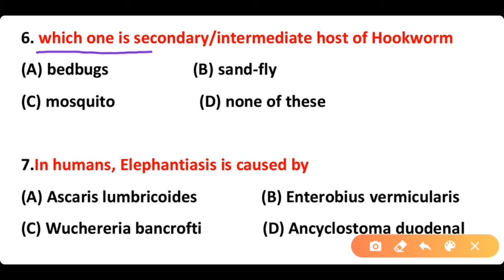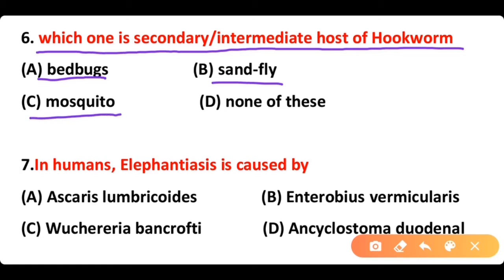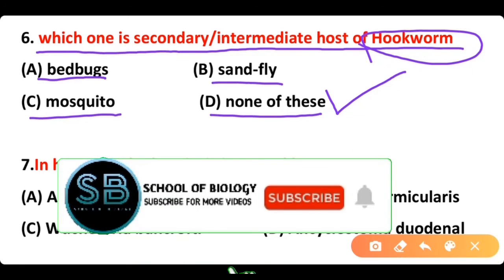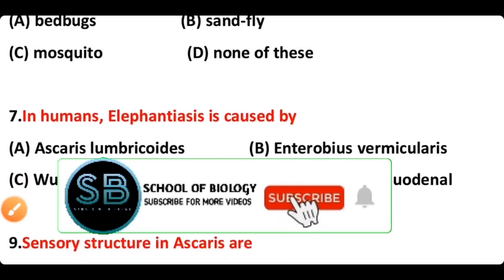Question 6: Which one is the secondary or intermediate host of hookworm? Options: A) bed bugs, B) sand fly, C) mosquito, D) none of these. The correct answer is option D, none of these. Because hookworm lives in the intestine of humans, feeds on blood, and has no secondary or intermediate host.